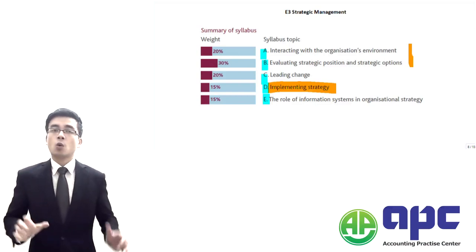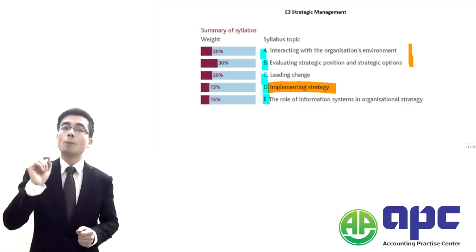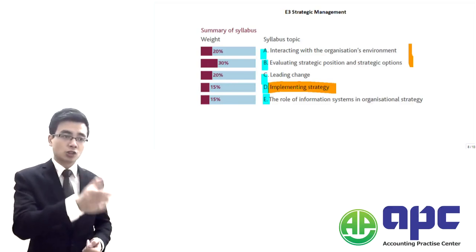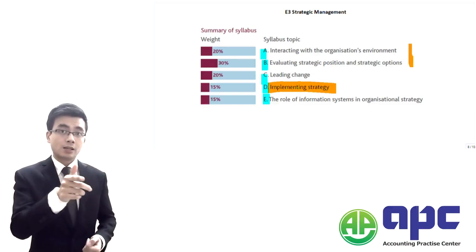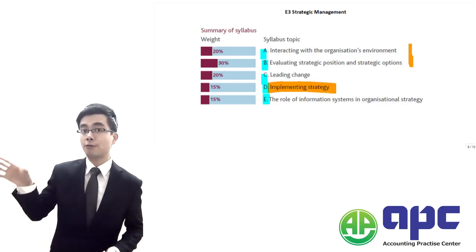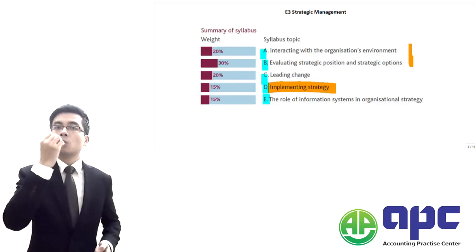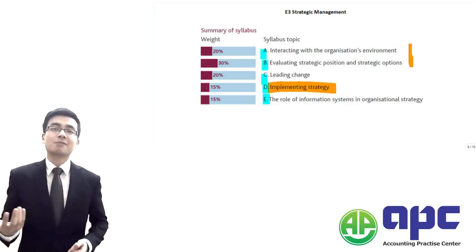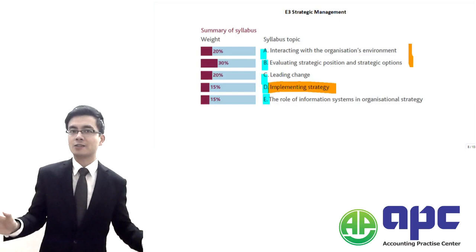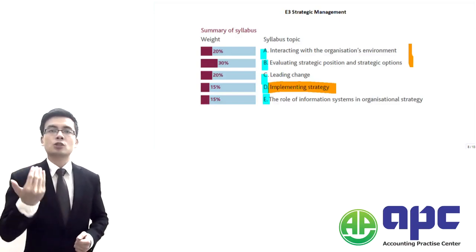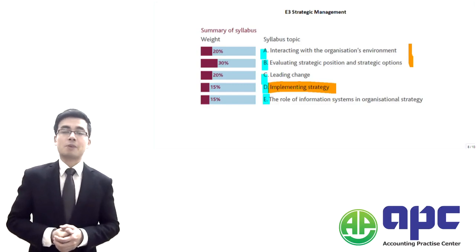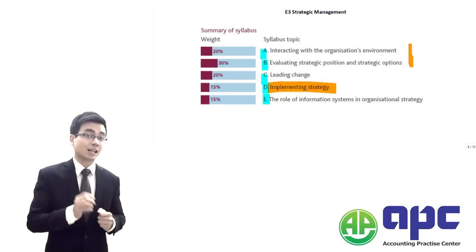From the E3 exam's perspective, section D mainly focuses on performance measurement. For example, if a manager is told to make changes but those changes reduce their bonus from $10 to $2, they won't comply. So how do we measure managers' performance fairly? Using tools such as EVA — Economic Value Added — is a key focus of section D.